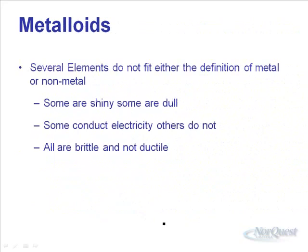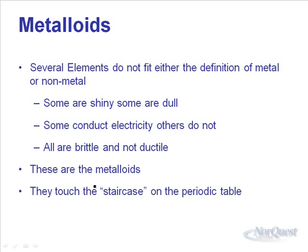The last group of elements are the metalloids — elements that don't fit the metal or non-metal definition. Some are shiny, some are dull. Some conduct electricity, others do not, and some conduct electricity only when their temperature changes. All of them are brittle and not ductile. On the periodic table, they're the ones that touch the staircase — a thick black line on one side of the table.